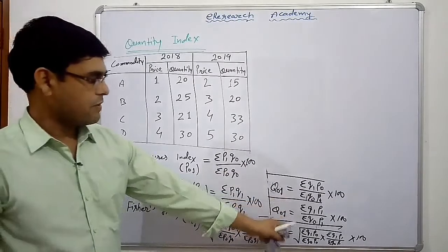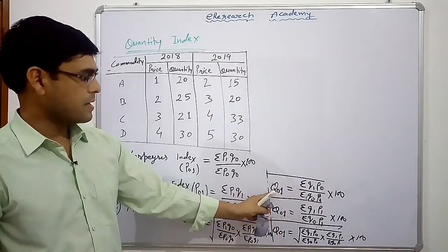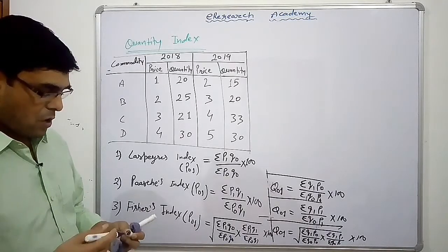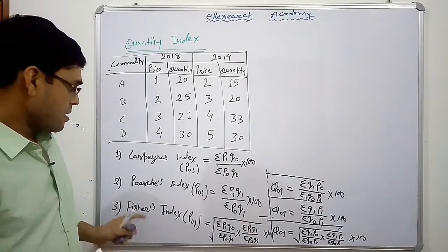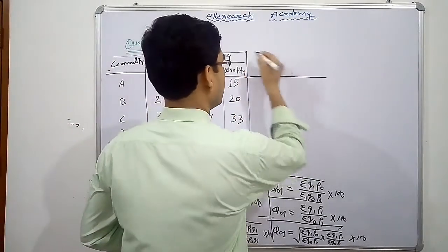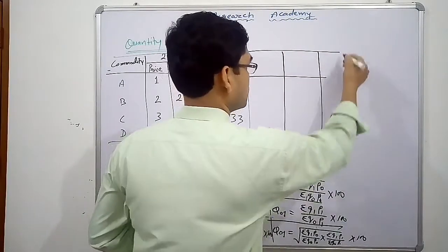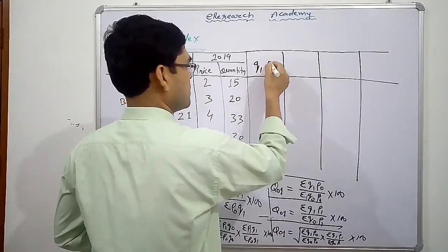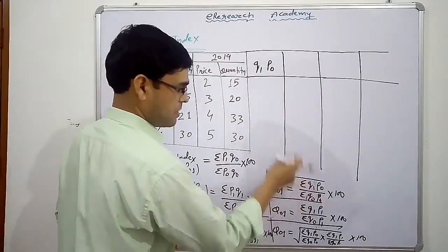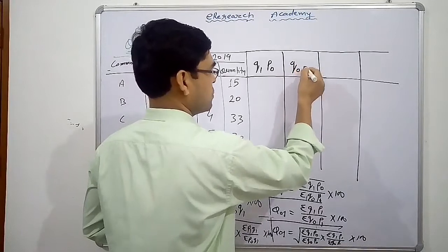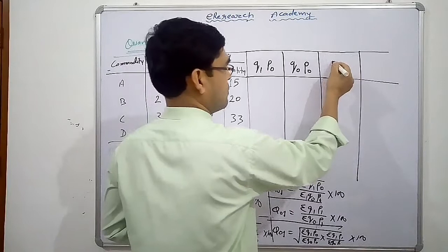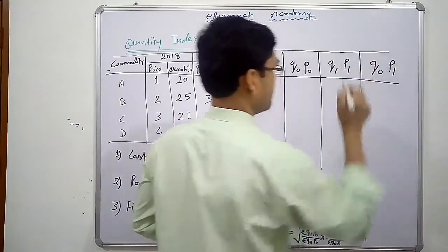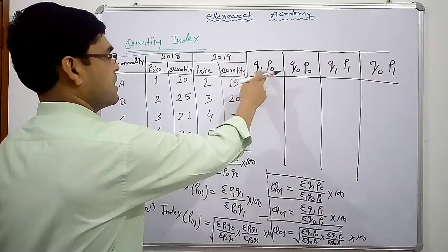Now accordingly we have to find out the quantity index number by all three — Paasche's, Laspeyre's, and Fischer's. What we have to do is the same as we were doing in price index. We need four columns: one — Q1 P0, two — Q0 P0, three — Q1 P1, and four — Q0 P1.